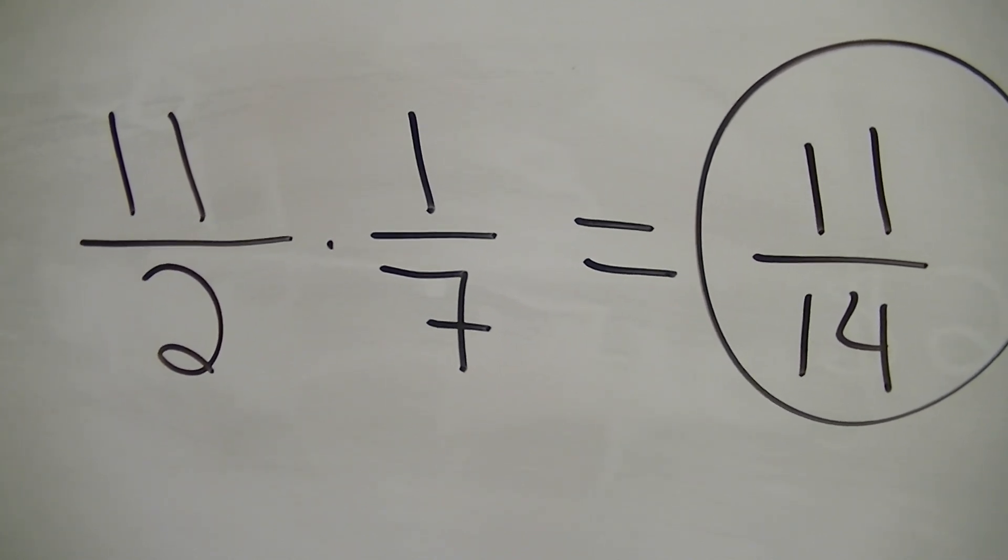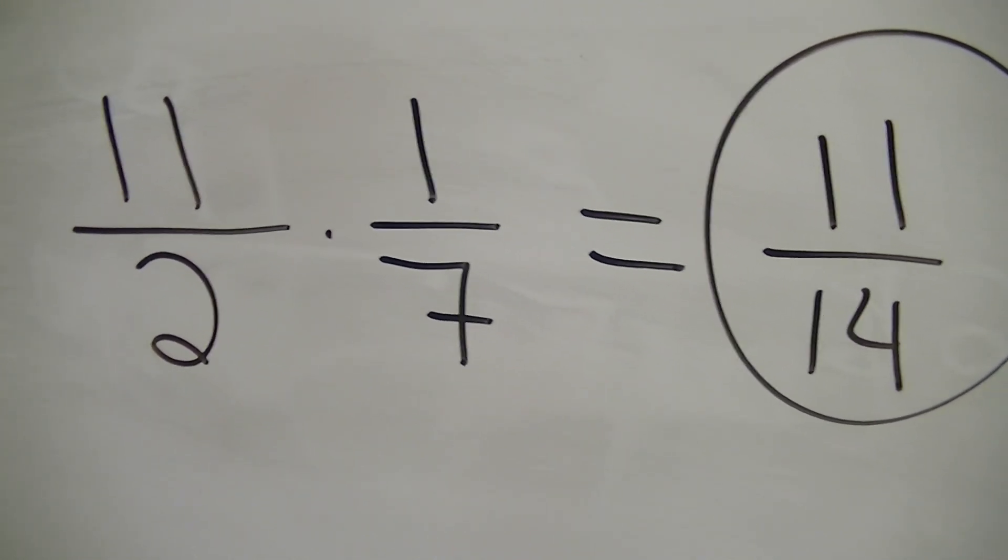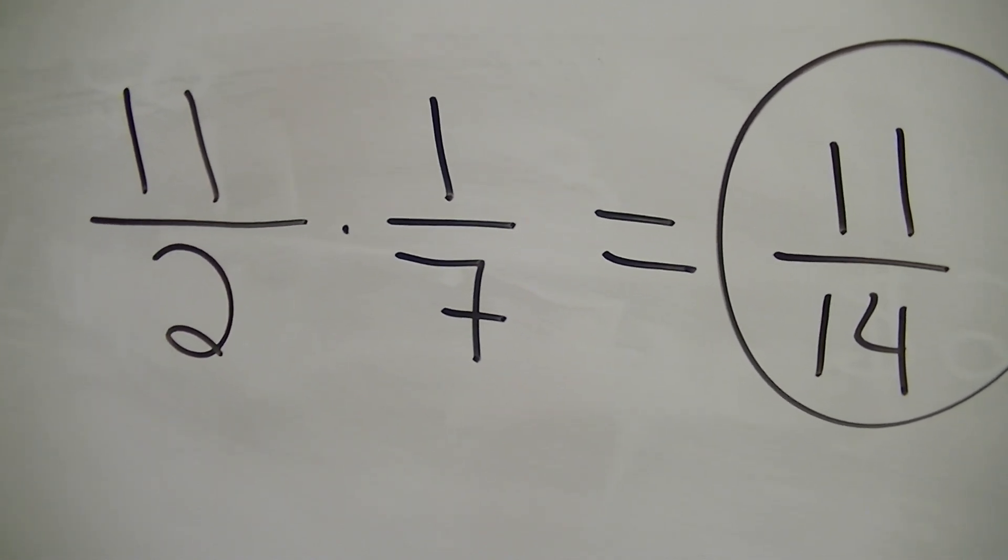So, 11 over 14 is our final answer. Now, we don't have to reduce it because we reduced it ahead of time. That's the joys of cross-canceling.